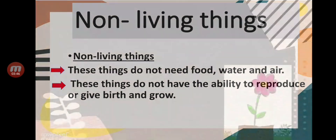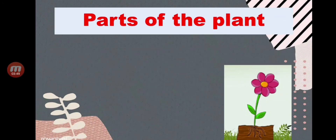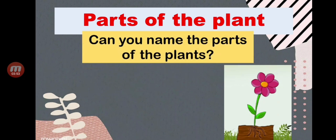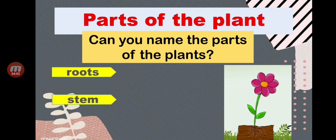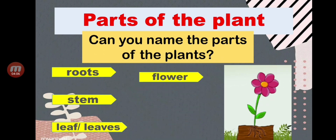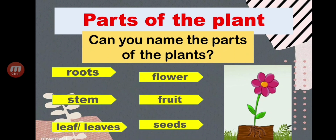Now let's proceed to the parts of the plant. Can you name some parts of the plant? The parts are: roots, stem, leaf or leaves, flower, and fruit and seeds. All of those are parts of the plant. Now let's proceed to the next part.